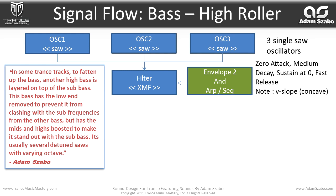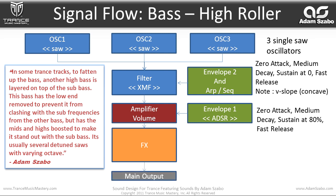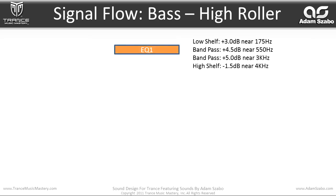The output of the filter flows into the amplifier, with volume modulated by Envelope 1 — zero attack, medium decay, sustain at 80%, and fast release. The output then flows through the effects. The first effect is EQ1, configured with a plus 3dB boost near 175Hz with a low shelf filter, a bandpass with a 4.5dB boost near 550Hz, another bandpass with a plus 5dB boost near 3kHz, and a 1.5dB cut near 4kHz.